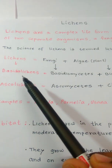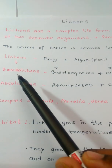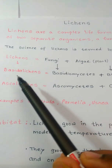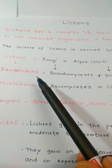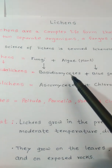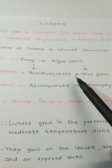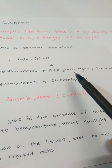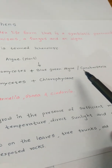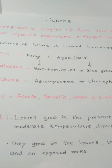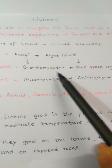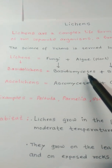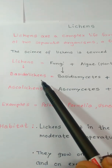Depending on the partners, Lichens are divided into two types: Basidiolichens and Ascolichens. In Basidiolichens, the Fungus partner is Basidiomycetes and the algal partner is blue-green algae or cyanobacteria. When these two types of partners come together, they form Basidiolichens.